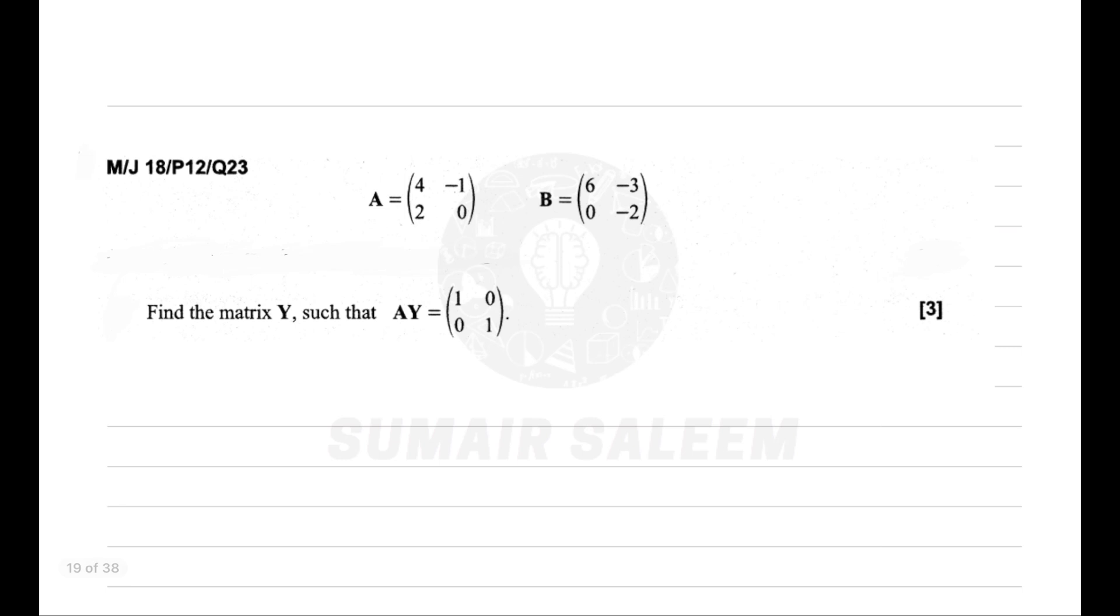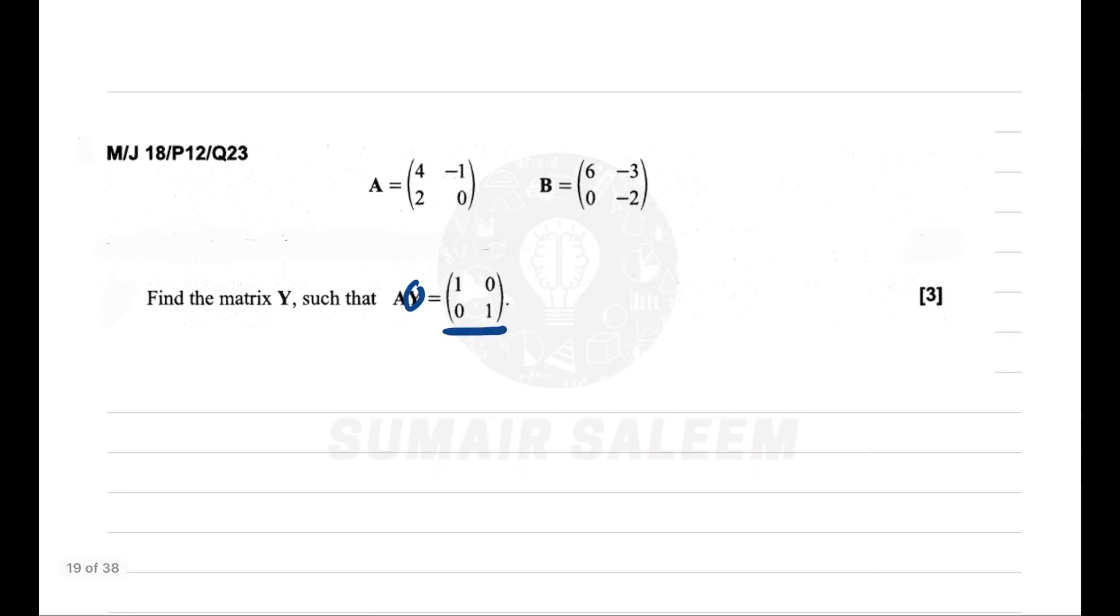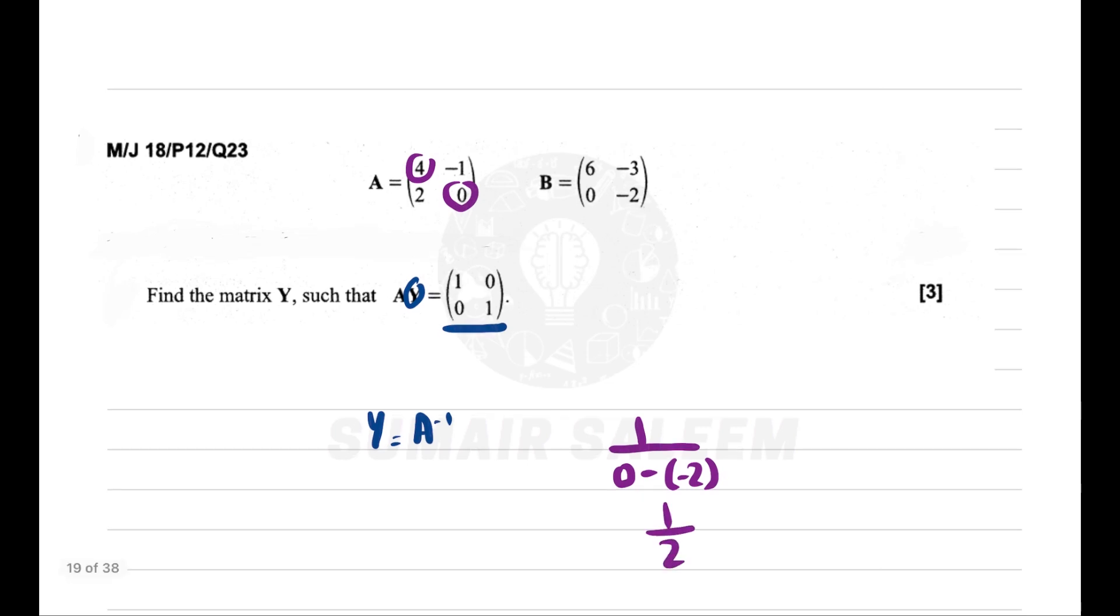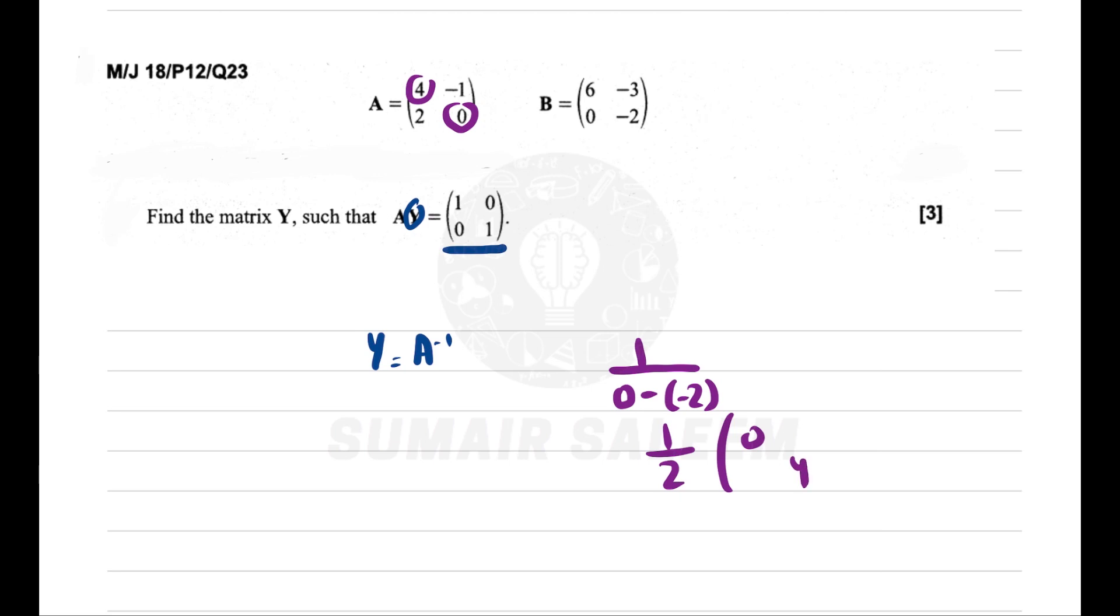Let's begin. For this 1 mark question, some students first find the inverse then multiply. Do you think it's worth it for 1 mark? No. We need to know the rule: A inverse into A equals identity matrix. So A times Y equals identity matrix means Y should be A inverse. Let's find A inverse: 1 upon determinant. AD multiply: 4 into 0 is 0, minus BC makes 1 upon 2. Switch AD positions and change BC signs. So that's my Y matrix.